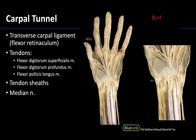This area right here that's kind of opaque looking — it's opaque and white — is going to be a ligament. To be more specific, it is the transverse carpal ligament, which is often referred to as the flexor retinaculum. This is the roof of the carpal tunnel, and the contents are going to run deep to this ligament.